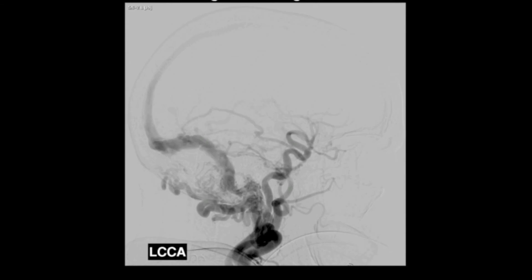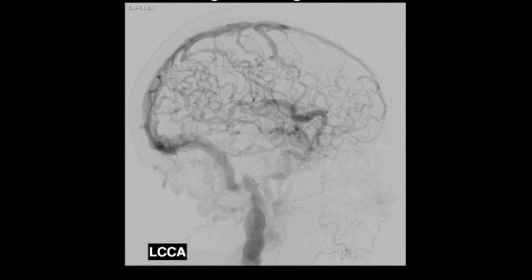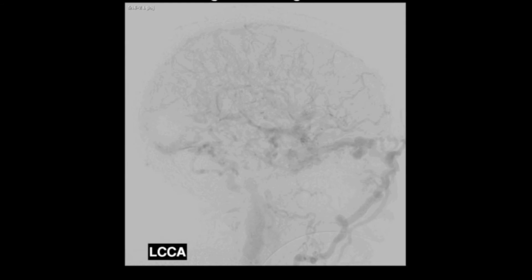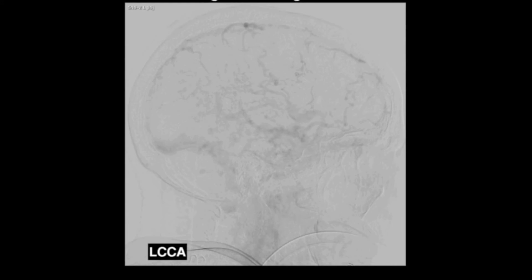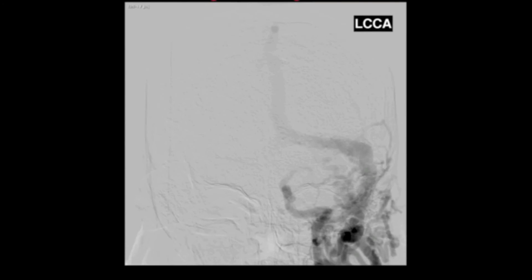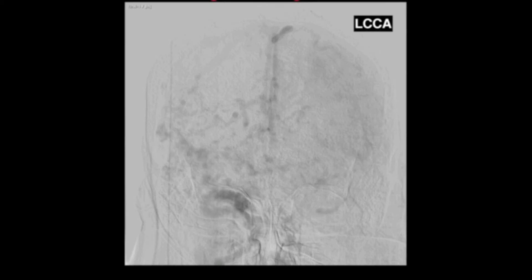Repeat angiography demonstrated similar but worsened angioarchitecture of the complex left-sided dural arterial venous fistula. Importantly, this is a rare situation where the occluded sinus is ipsilateral to the fistula and drains only the venous outflow of the fistula itself. This presents a rare opportunity to employ the dual microcatheter technique and embolize both the fistula and the sinus.